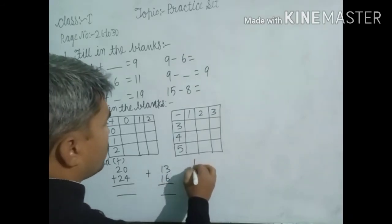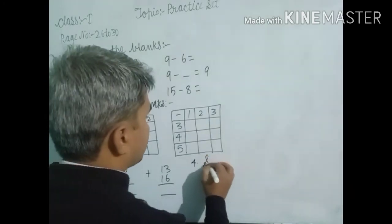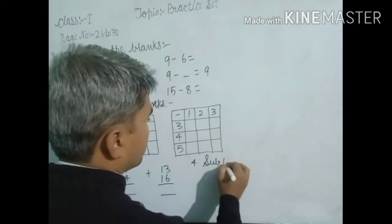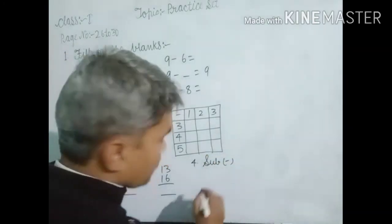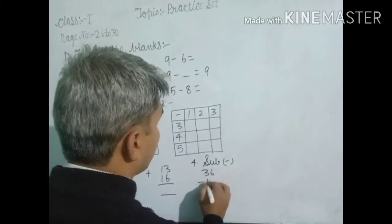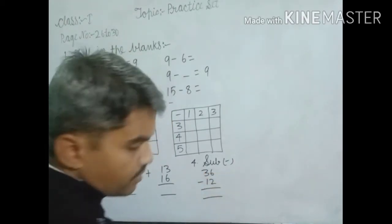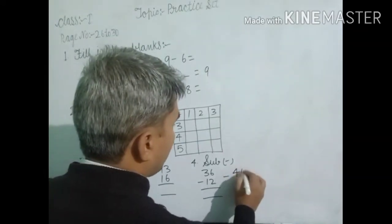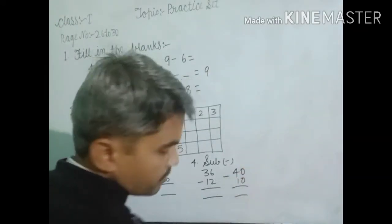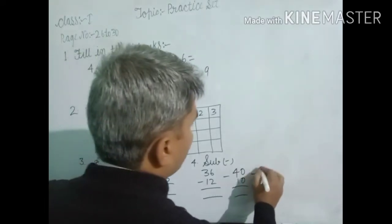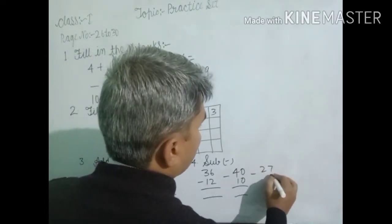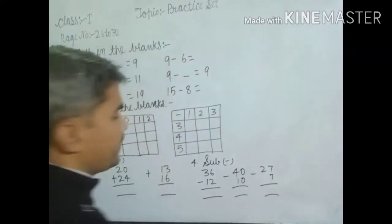Now, fourth questions, subtractions. 36 minus 2, and 40 minus 10, and 27 minus 7. Find the answers.